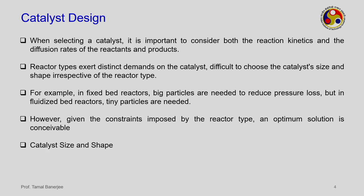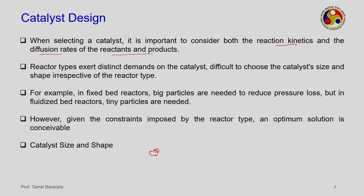For catalyst design, when selecting a catalyst it is important to consider both reaction kinetics and diffusion rates of reactants and products. Reactants diffuse onto the catalyst surface, react, and then products diffuse out into the bulk. One part is governed by reaction kinetics, the other by diffusion rates. Both are important. Unfortunately, most R&D improves catalyst performance but not mass transfer rates, as there are limitations there.